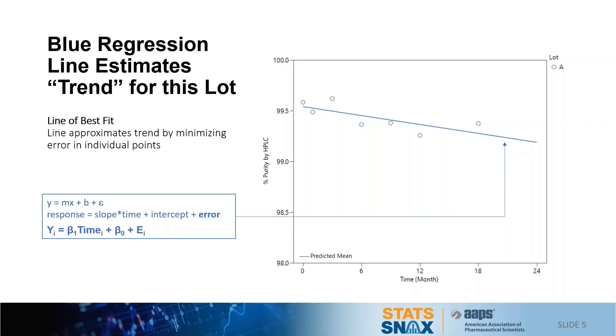The statistician will more specifically write the line's equation in a model format, as shown here, where the predicted mean of y equals beta 1 times time plus beta naught plus an error term. Note that we've now added that error term to all of the equations.